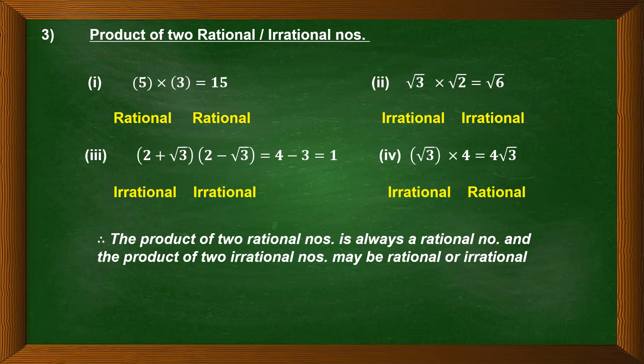Now let us look at the product of rational and irrational numbers. For two rational numbers: 5 into 3 equals 15, a rational number. For two irrational numbers: root 3 into root 2 equals root 6, which is irrational. Now let us take another example with two irrational numbers: (2 plus root 3) and (2 minus root 3).